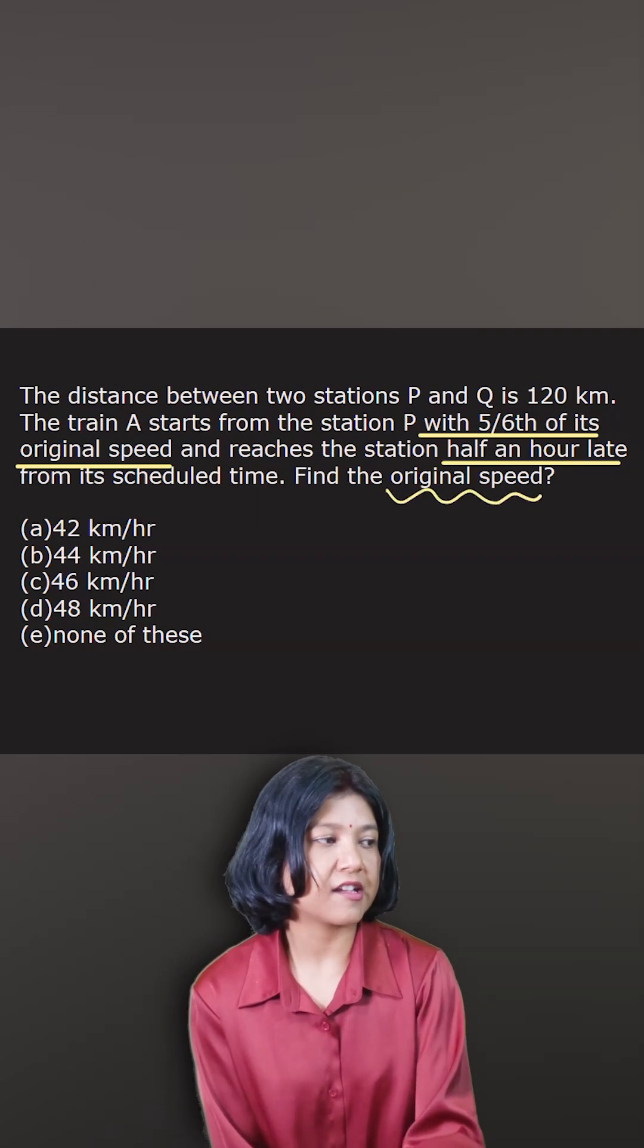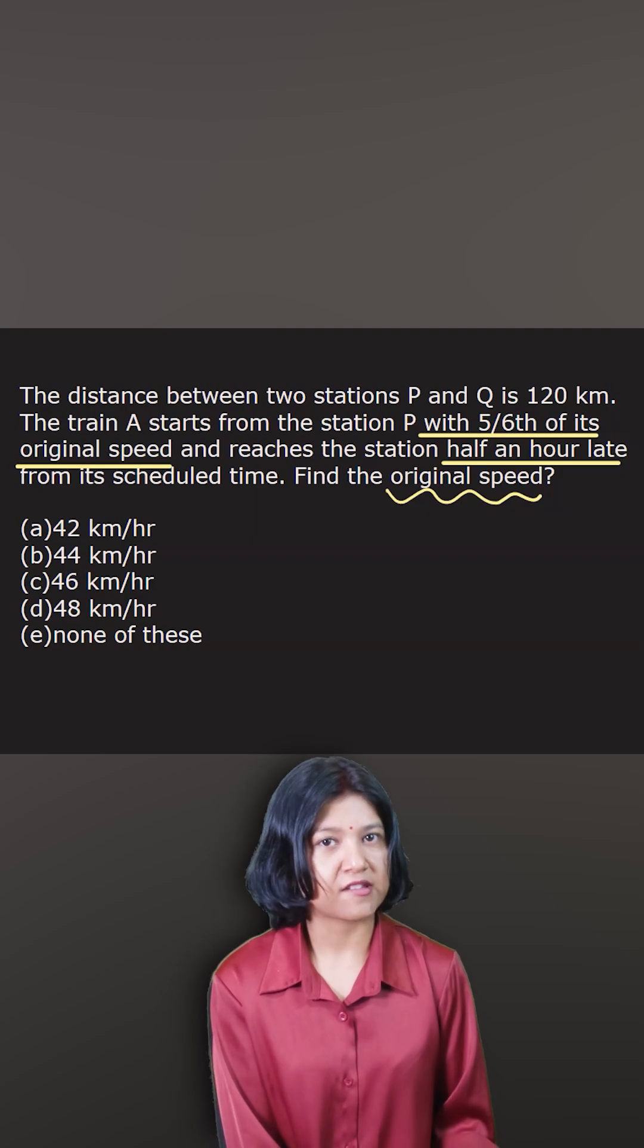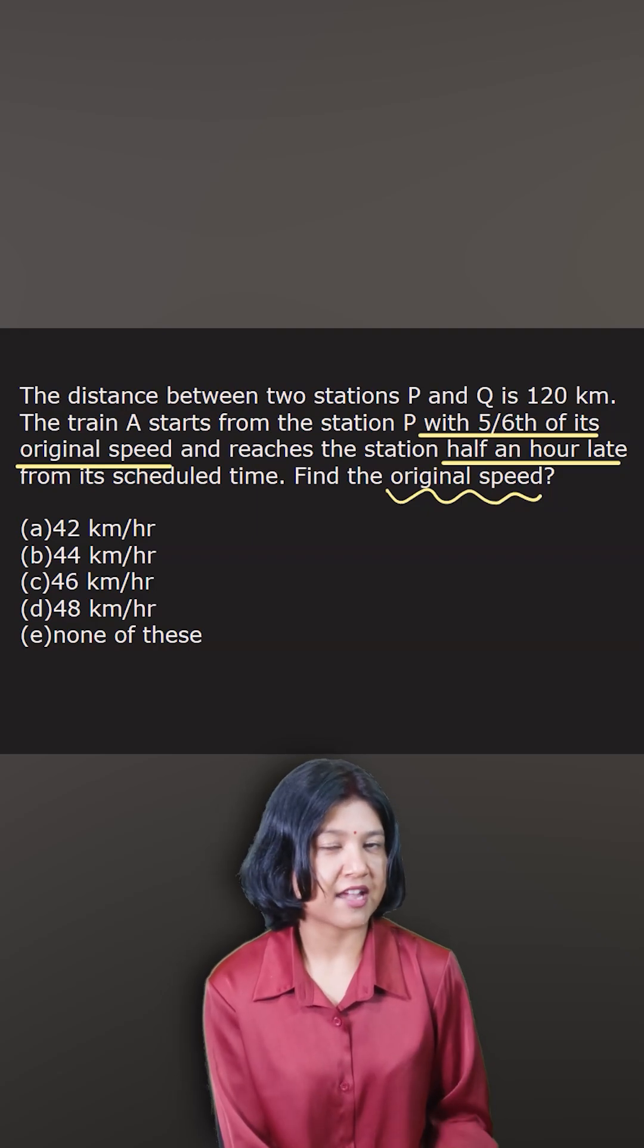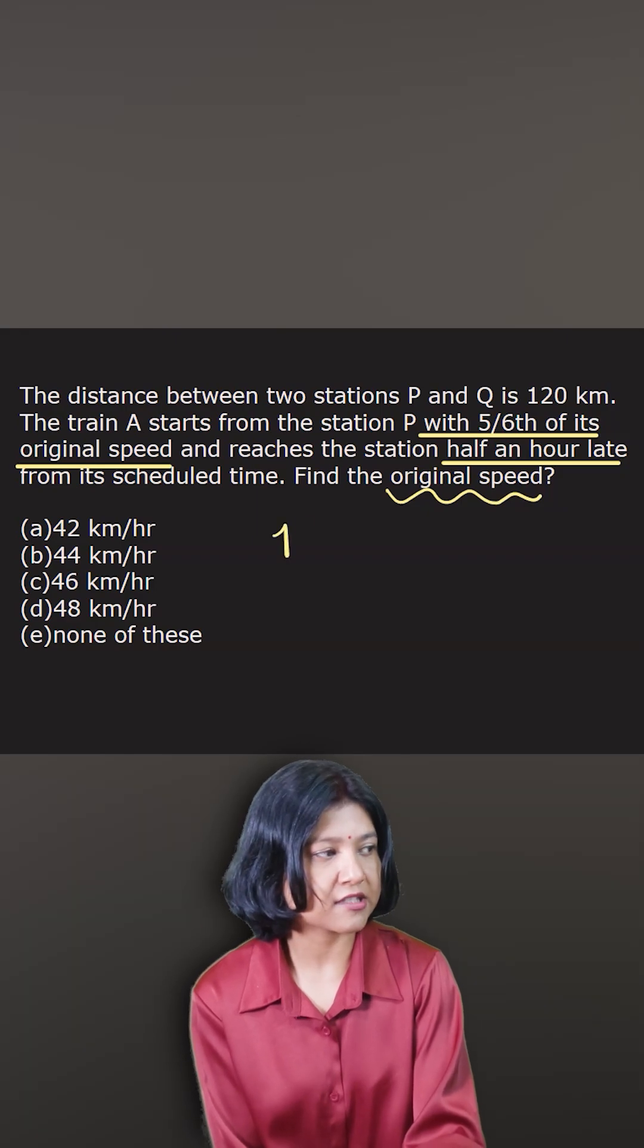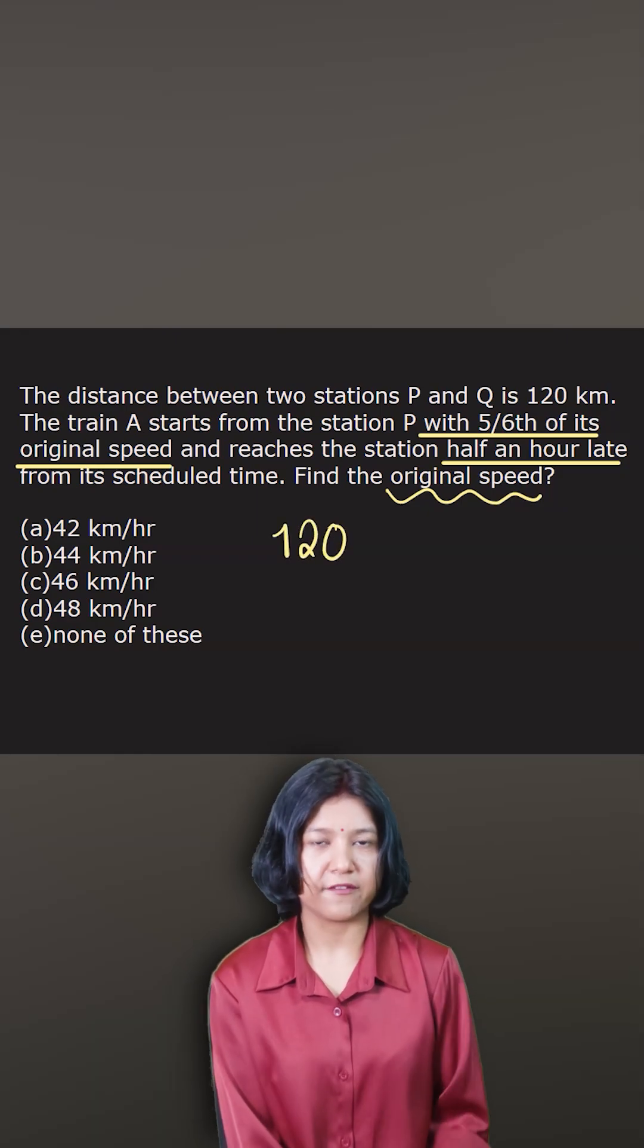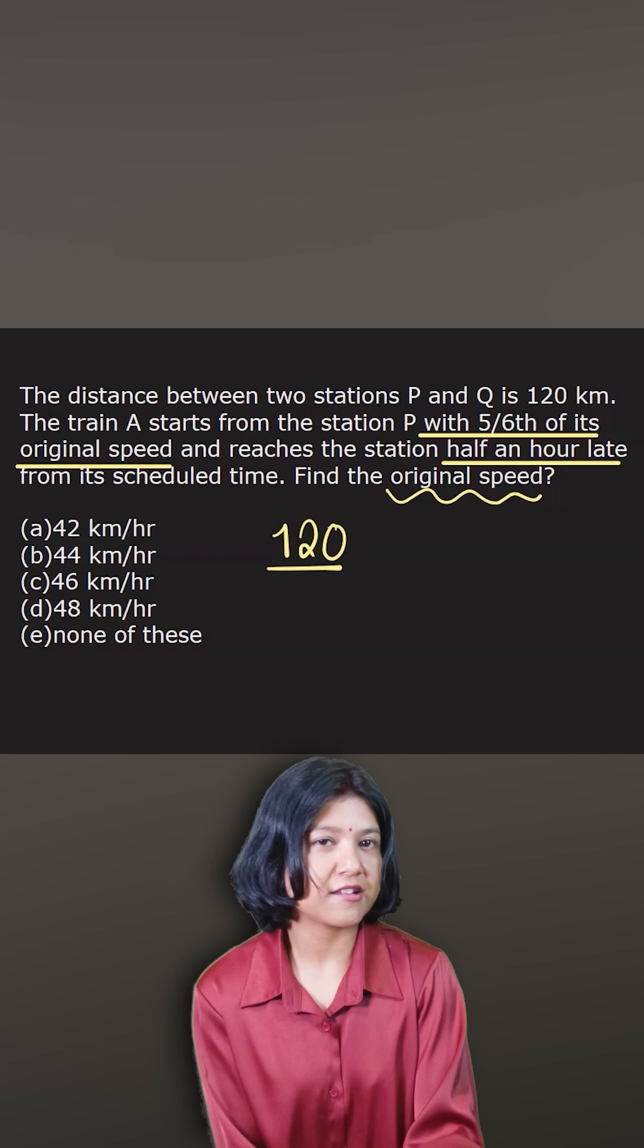So to find the original speed, let's say because the time has been given to us or time value has been given as a comparison, I want to find out time in terms of what values I have. 120 is the distance that it is supposed to cover. So let's say the original speed is one unit.